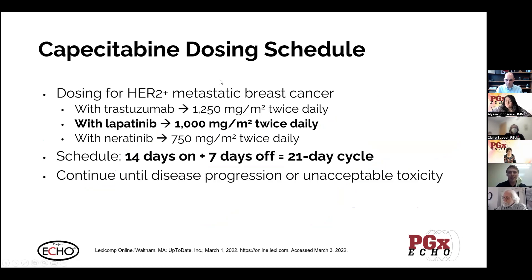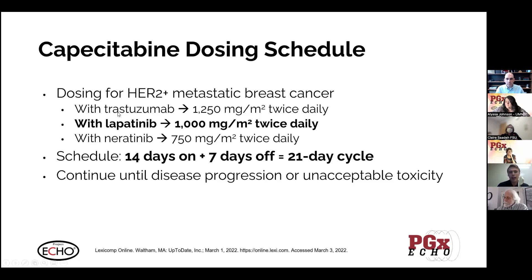Capecitabine's dosing is complicated and varies between cancer types and specific drug combinations. Focusing on our patient case today: the patient has HER2-positive metastatic breast cancer. HER2 is a protein on the surface of cancer cell membranes that, when activated, signals the cell to divide and proliferate, causing cancer progression. Drugs targeting HER2 include trastuzumab, an IV monoclonal antibody, and oral agents lapatinib and neratinib. Lapatinib is preferred for patients with brain metastases, and our patient today is on lapatinib.